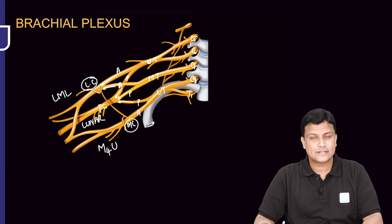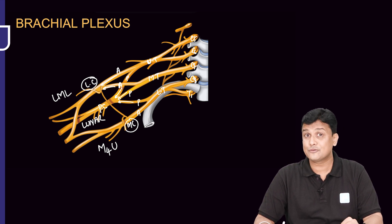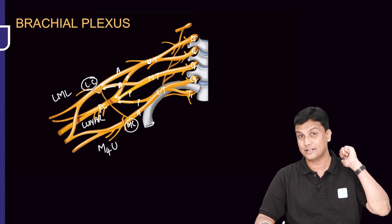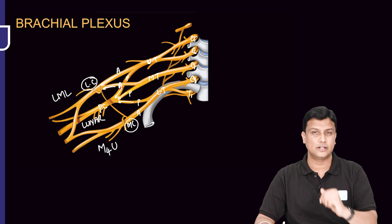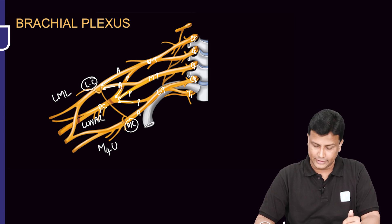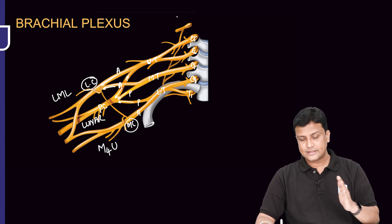For the posterior cord, we use the mnemonic LUNAR: L for lower subscapular nerve, U for upper subscapular nerve, N for nerve to latissimus dorsi (thoracodorsal nerve), A for axillary nerve, and R for radial nerve.